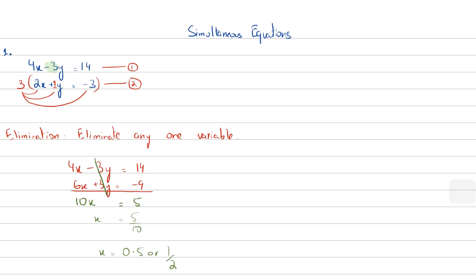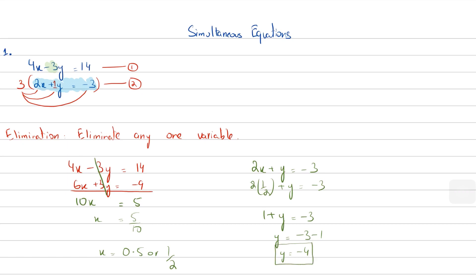I'm going to use the original second equation — before it was multiplied by 3 — so: 2x plus y equals minus 3. I'll highlight it in blue. Plugging in x equals one half: 2 times one half plus y equals minus 3. The 2 and 2 cancel, giving 1 plus y equals minus 3, so y equals minus 3 minus 1, which means y equals minus 4.